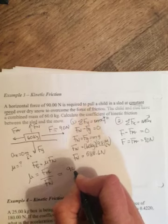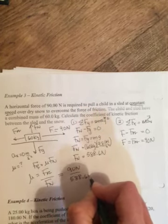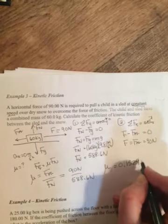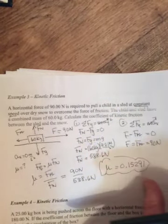And I promise the next one, this won't be the same. I'll give you an A. So then it's 90 newtons on the top over 588.6 newtons on the bottom. Do the math and get 0.15291 as your answer.